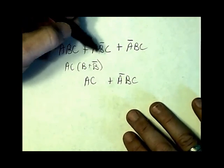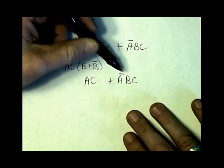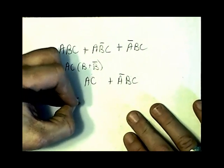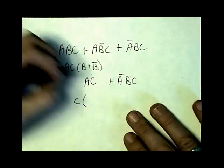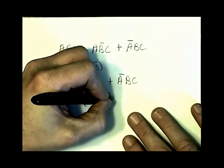I still have this in my problem. The next step is to recognize I have a C in both of these. I'm going to take the C out and I'm going to be left with A plus not AB.